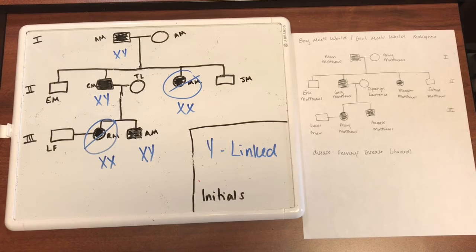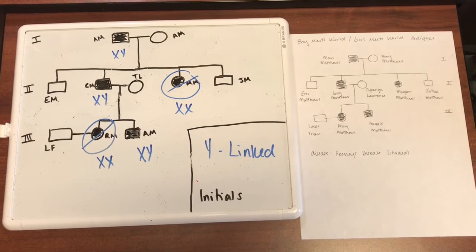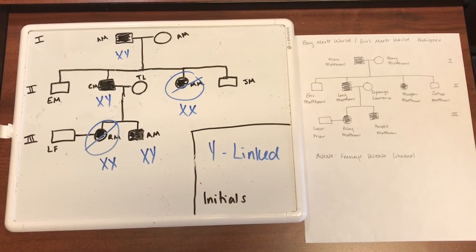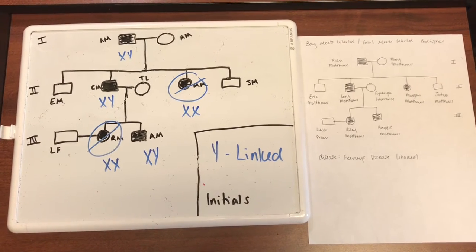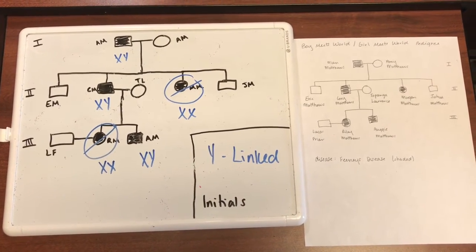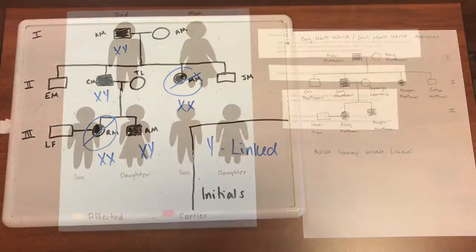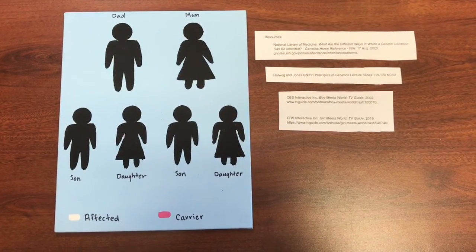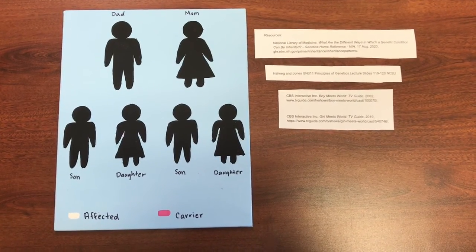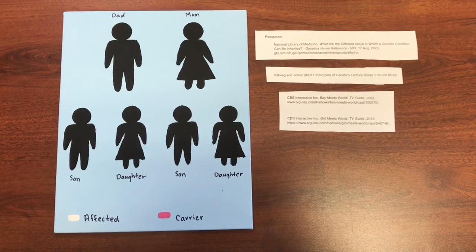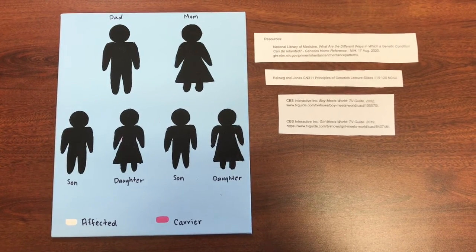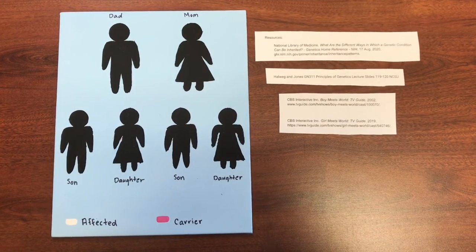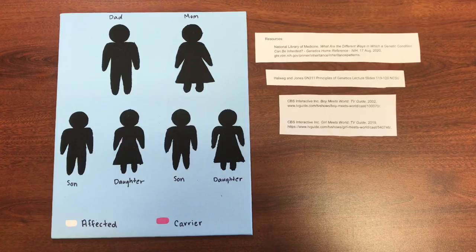Lastly, Y-linked is not possible for our pedigree because Morgan and Riley are both females, yet they have the trait. As a reminder, the canvas on the left is my personal art, while the other information was found from the references on the right.